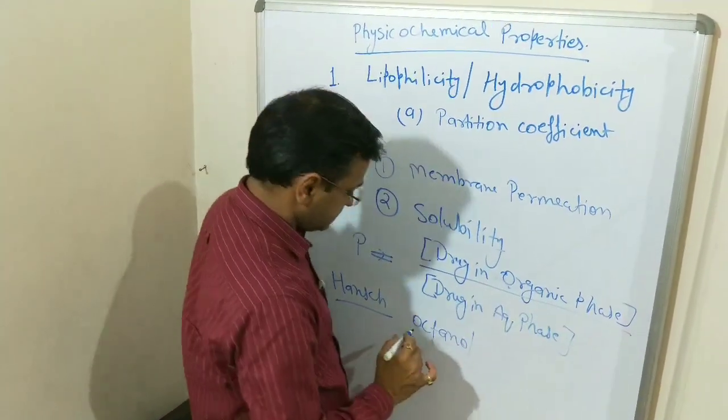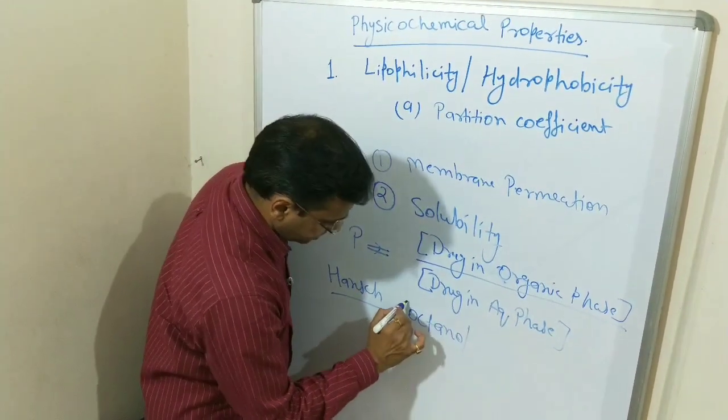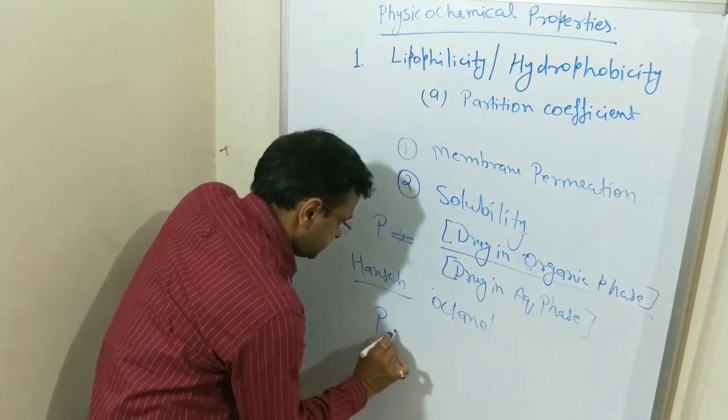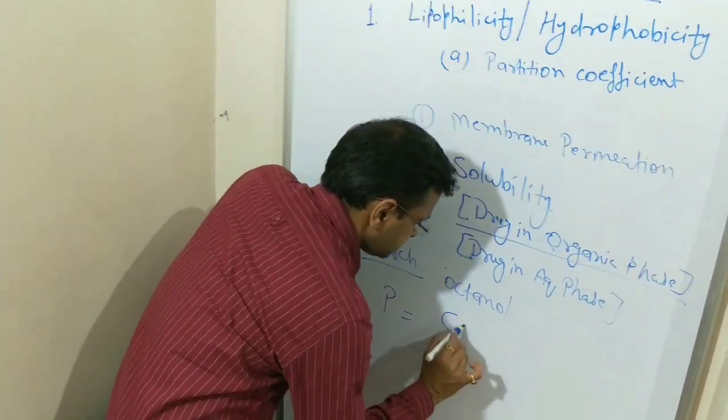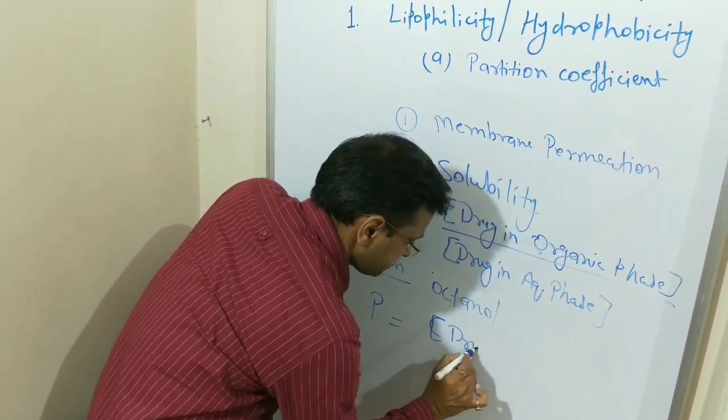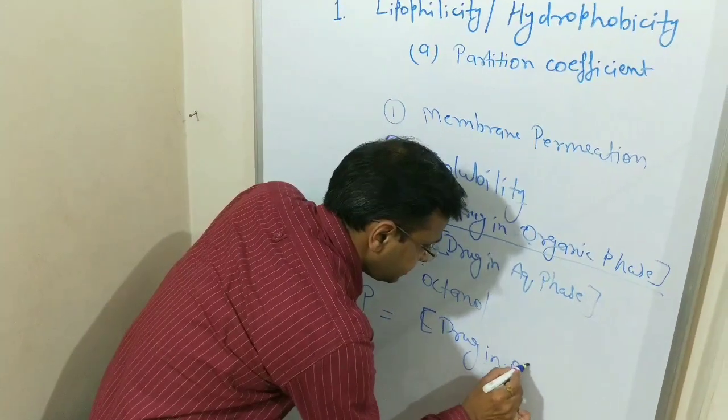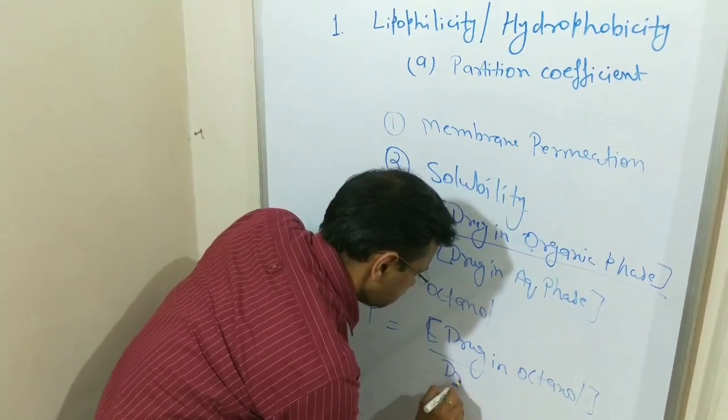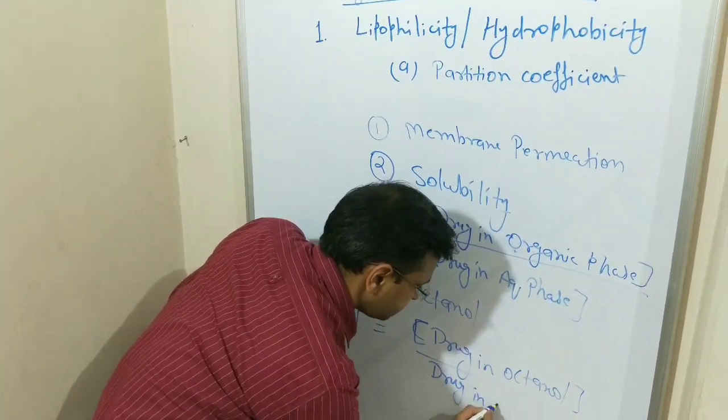So Hansch rectified all these variations by using octanol, and hence the equation changes and goes to partition coefficient equals to concentration of drug in octanol upon concentration of drug in water.